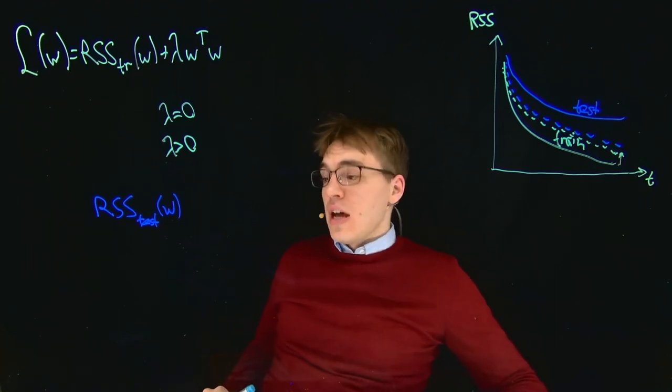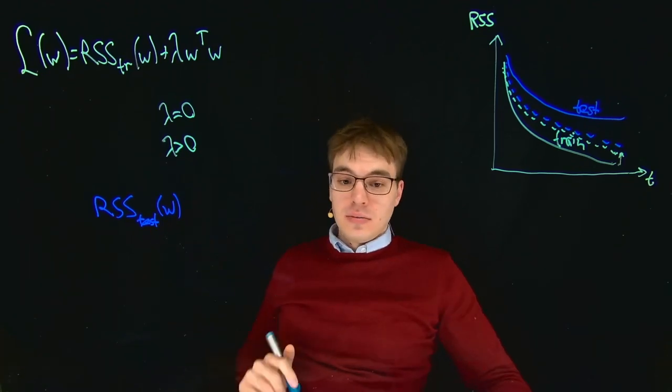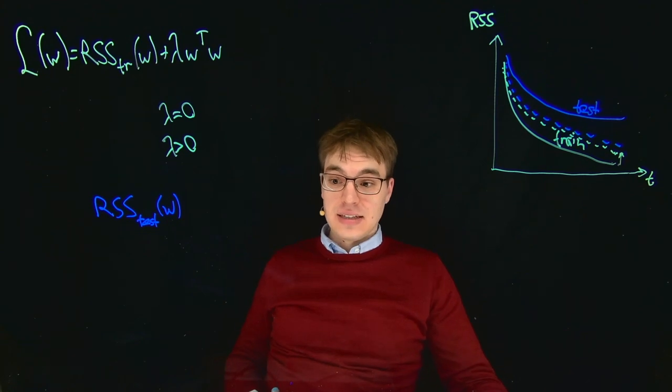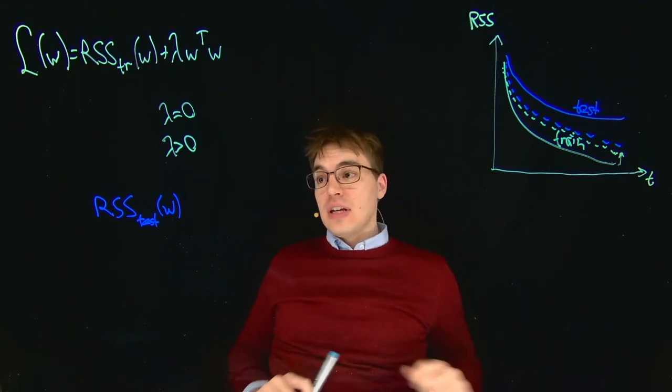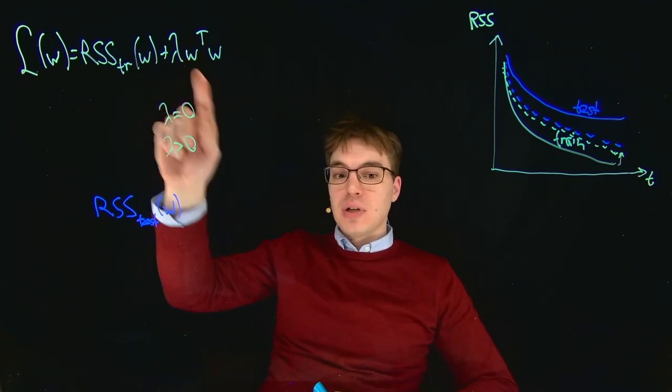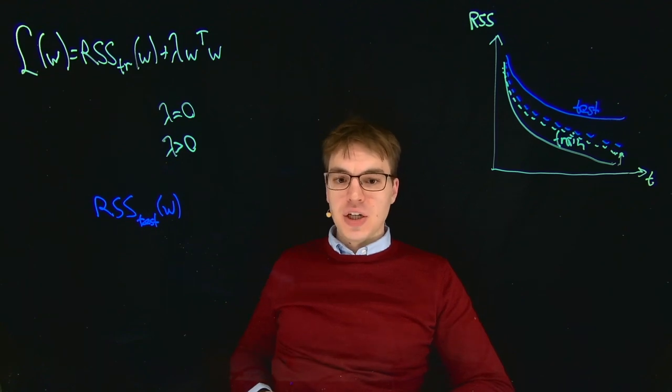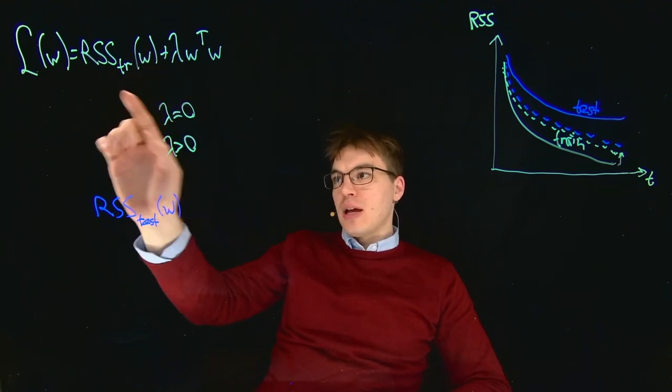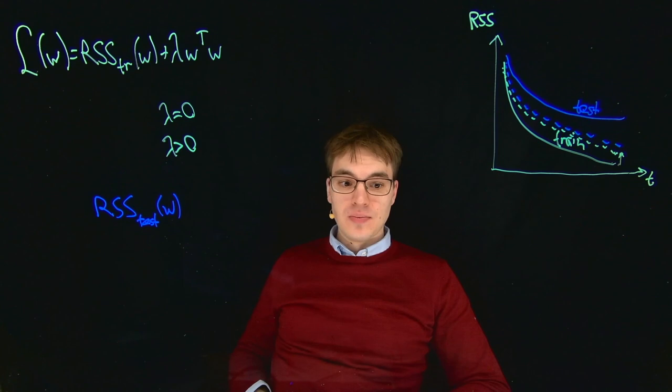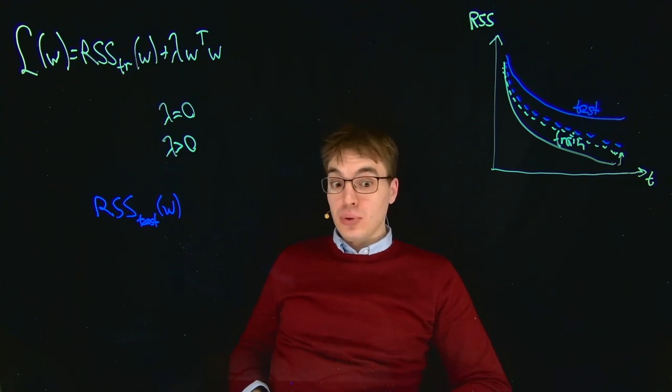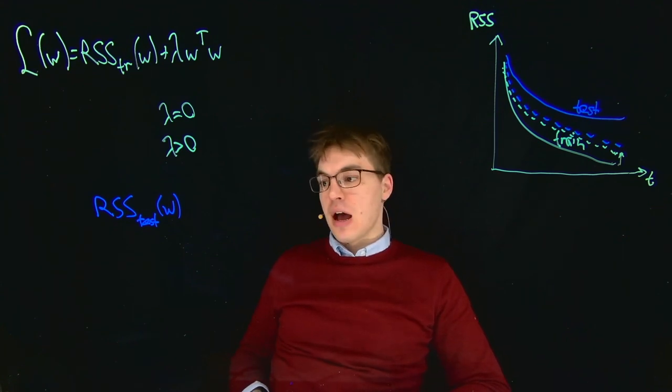The question now is what happens to our RSS in the test case? At first, introducing some lambda and shifting away from the optimal W for this RSS improves our results for RSS test.